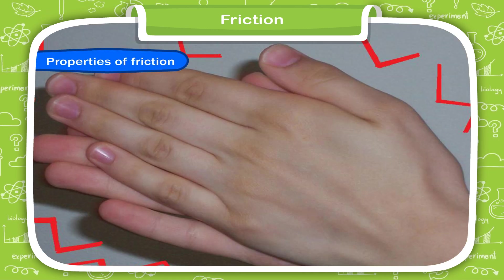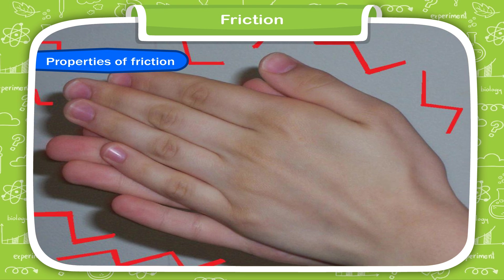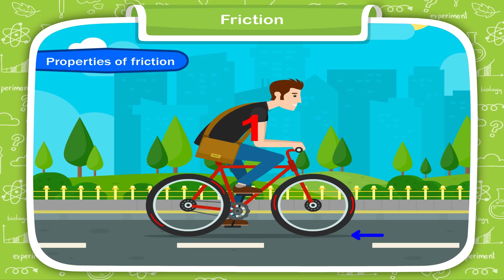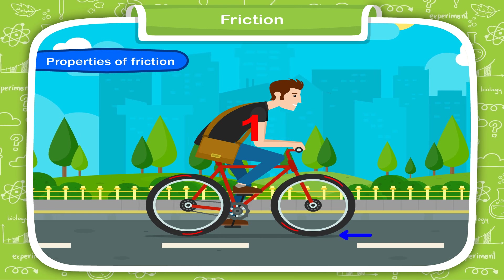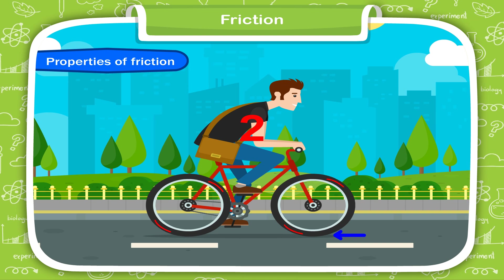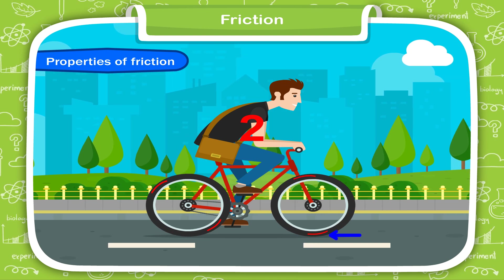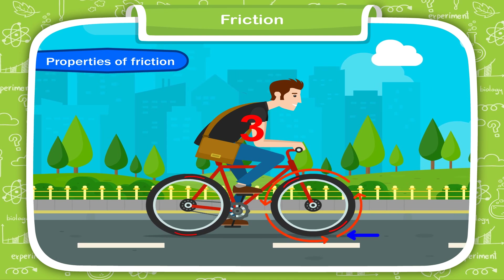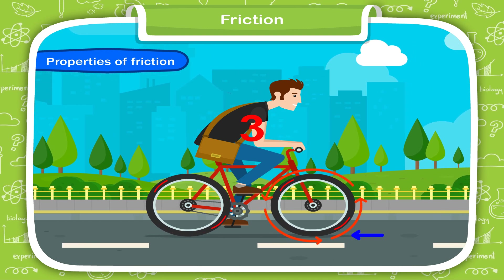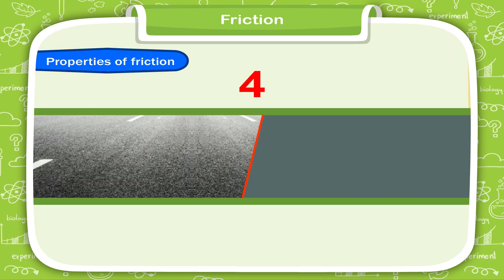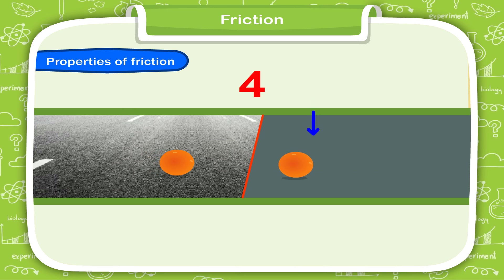Properties of Friction. It has these properties. 1. The force of friction acts between two objects in contact with each other. 2. The force of friction opposes the motion of an object. 3. It acts in a direction opposite to the direction of the motion of an object. 4. A rough surface exerts more force of friction than a smooth surface.